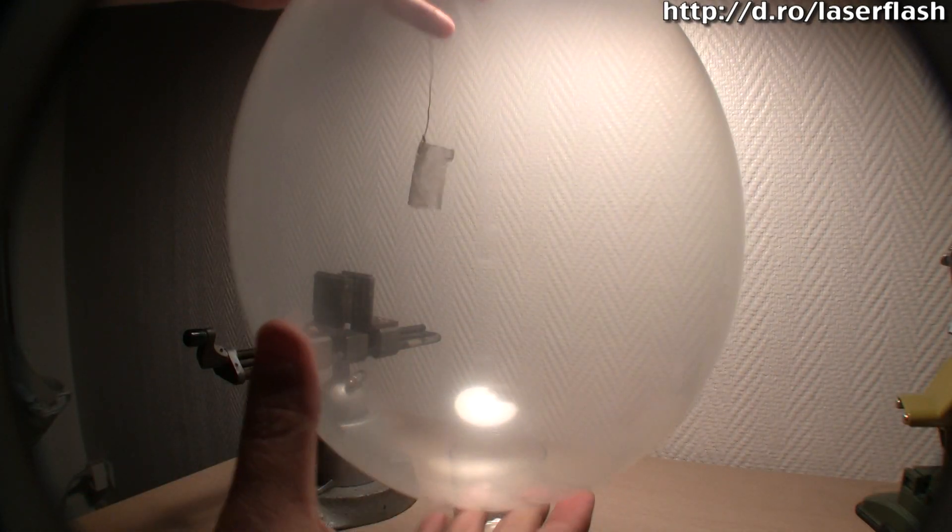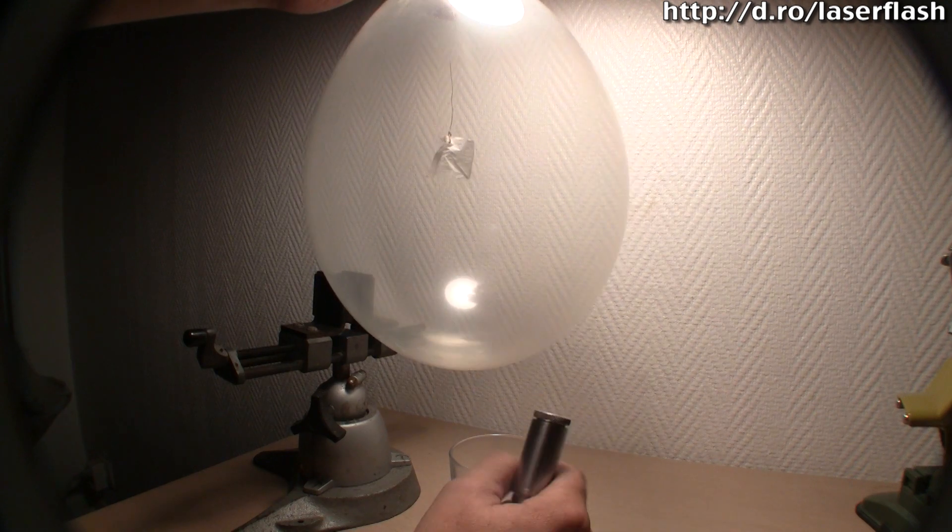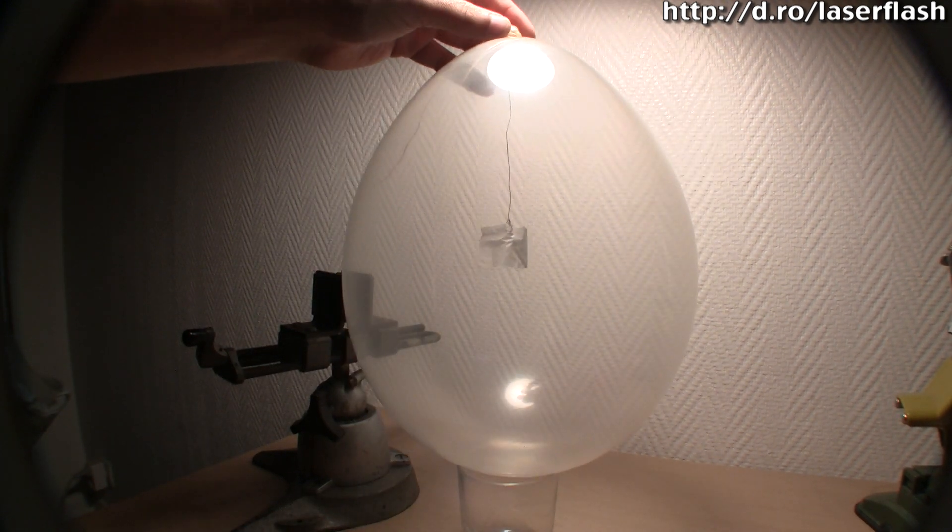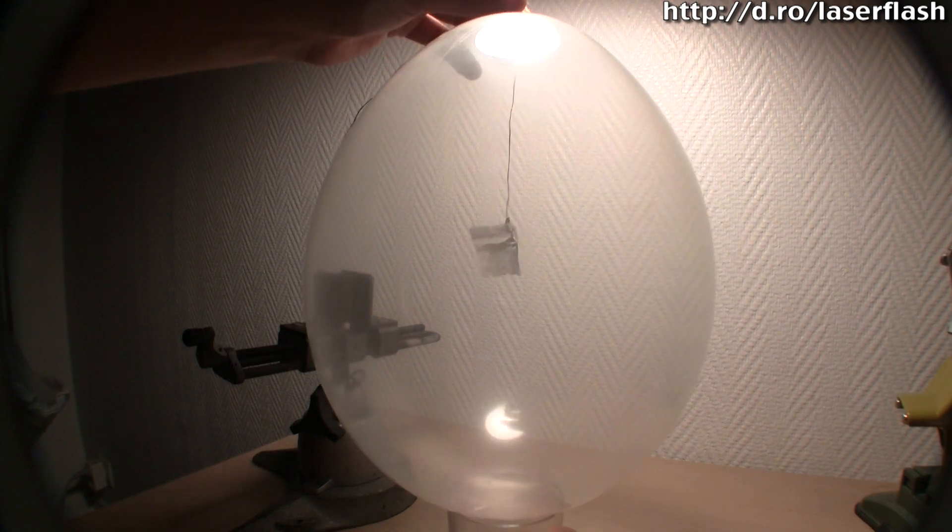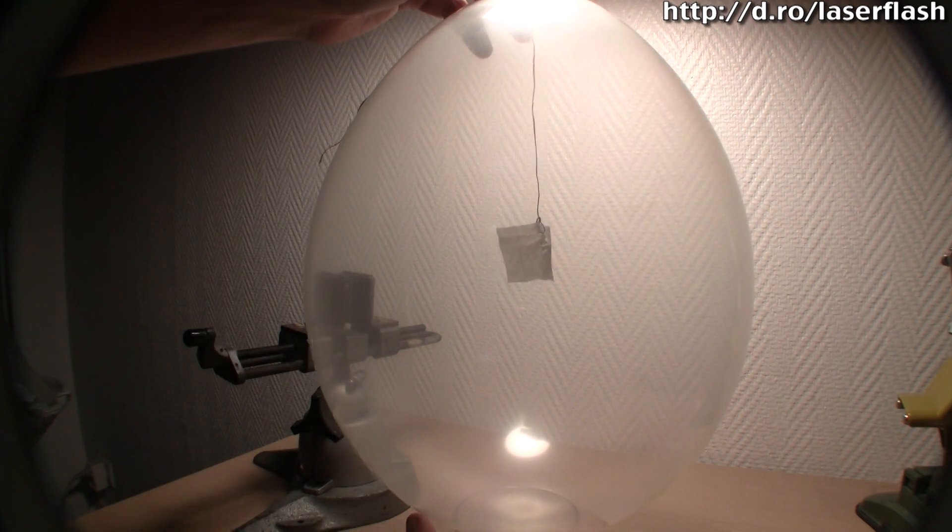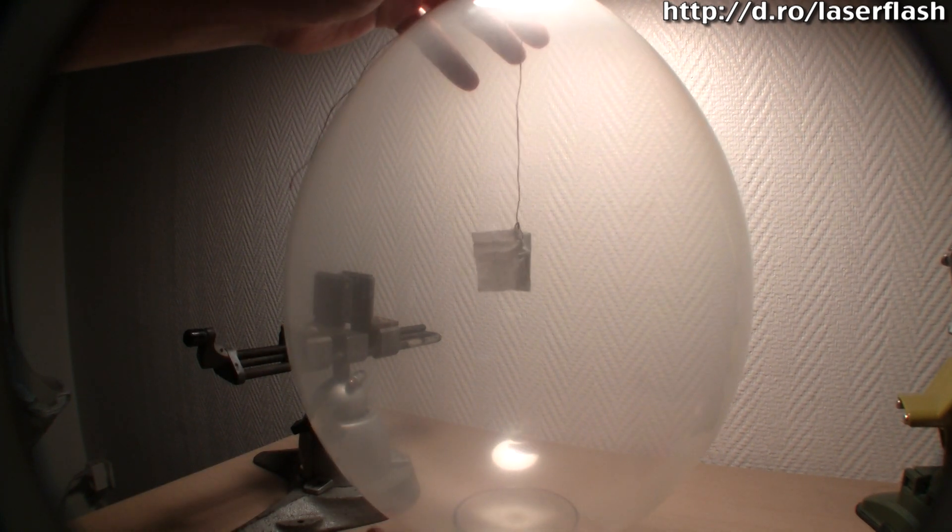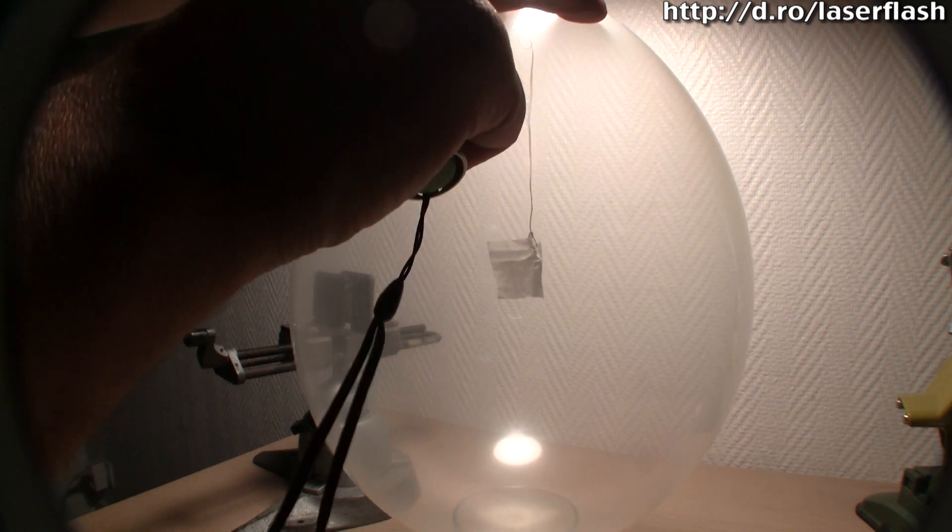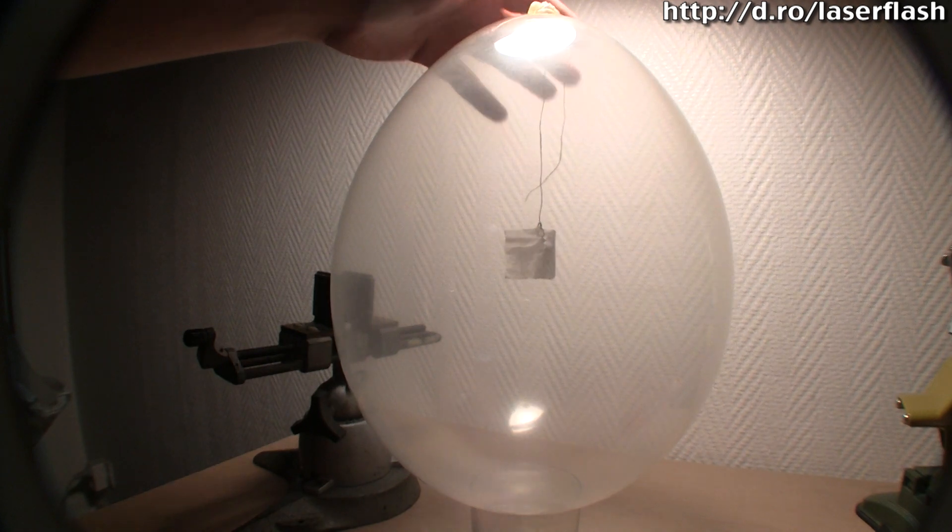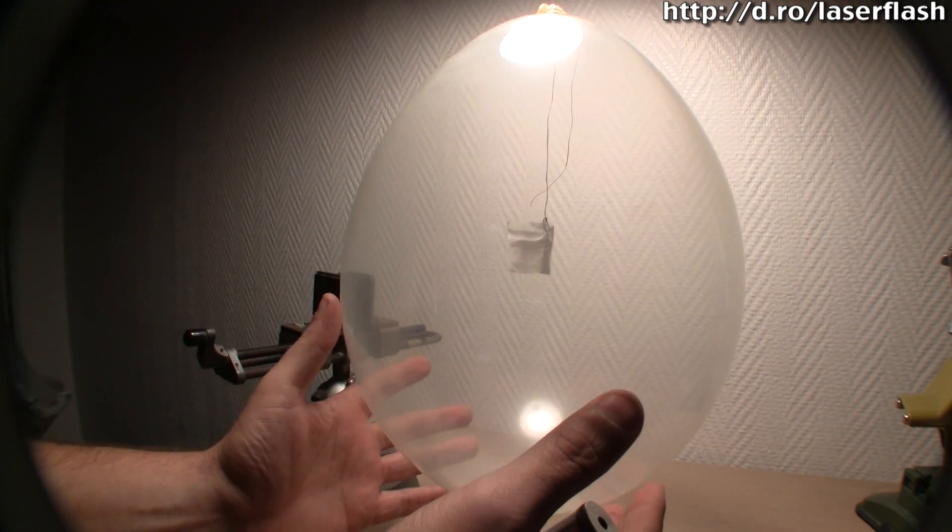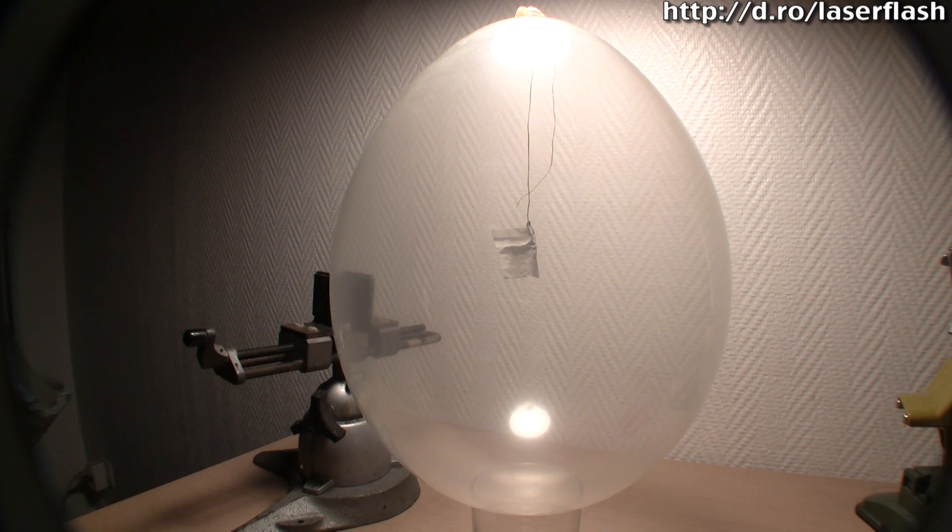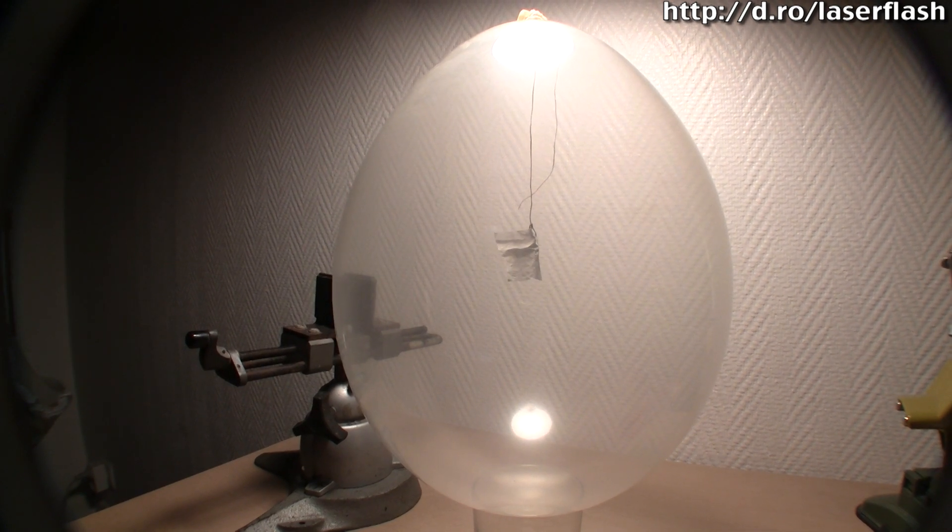And now we're going to position that using our glass. We want to make sure that the bit of paper is hanging as best we can centrally in the balloon.